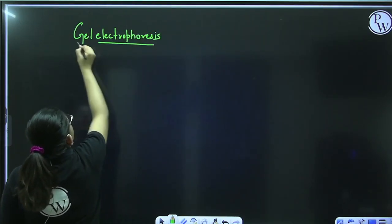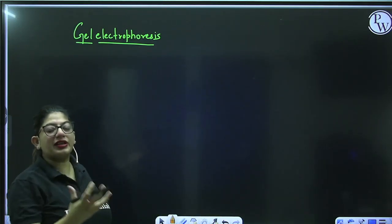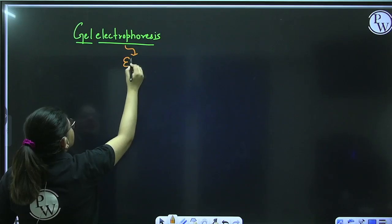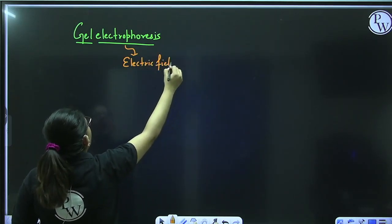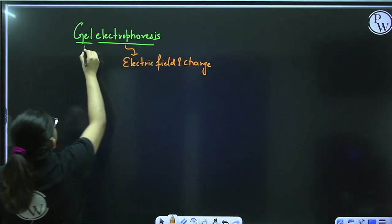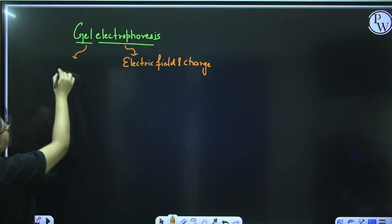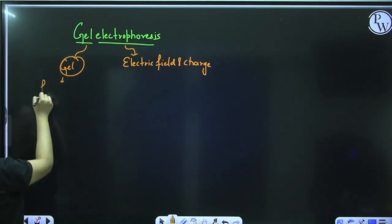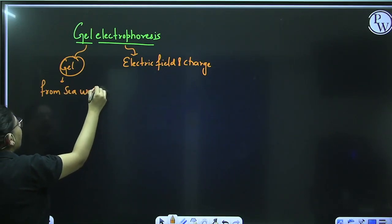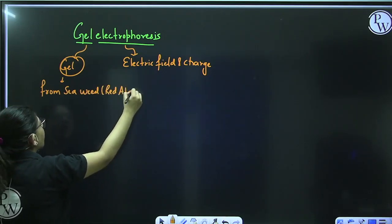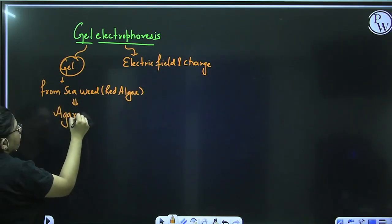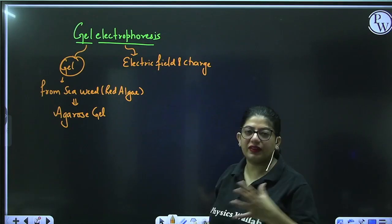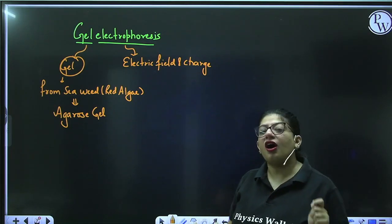By its name you can understand a lot about this process — electrophoresis means electric field and charge are involved, and some gel is involved. The gel used is taken from a seaweed — a red algae — and the name of the gel is agarose gel. Agarose gel is just like the jelly you eat; it is used in this particular experiment.